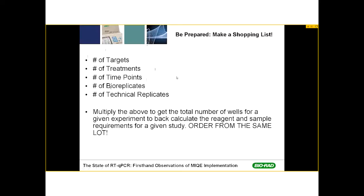By knowing this information, you can order, for example, your cell culture medium from the same lot because you know how much you'll need, or order your compound or drug from the same lot. You'll also know from this total number how much your experiment will cost by adding up the total reagents needed, giving you an idea of whether you can afford to do that experiment or whether you need to pare it down a little.